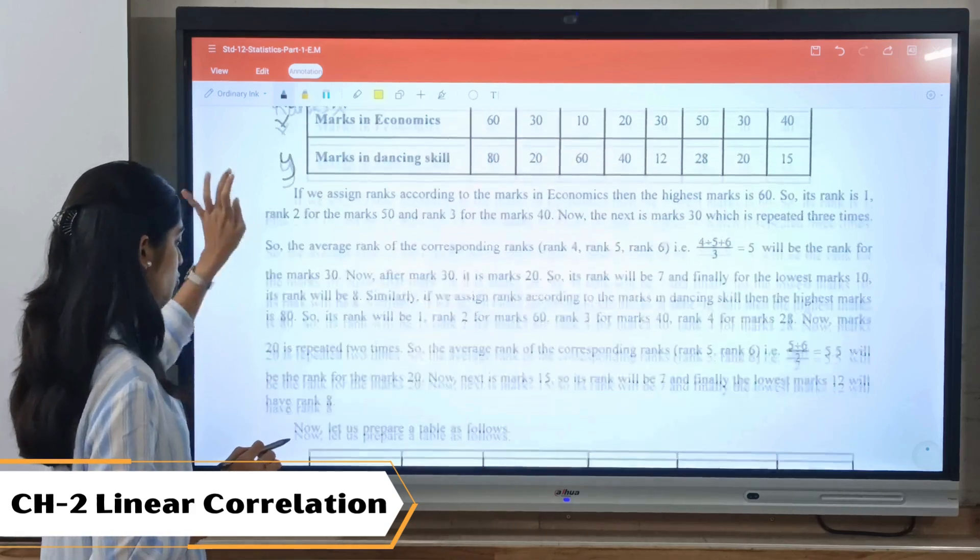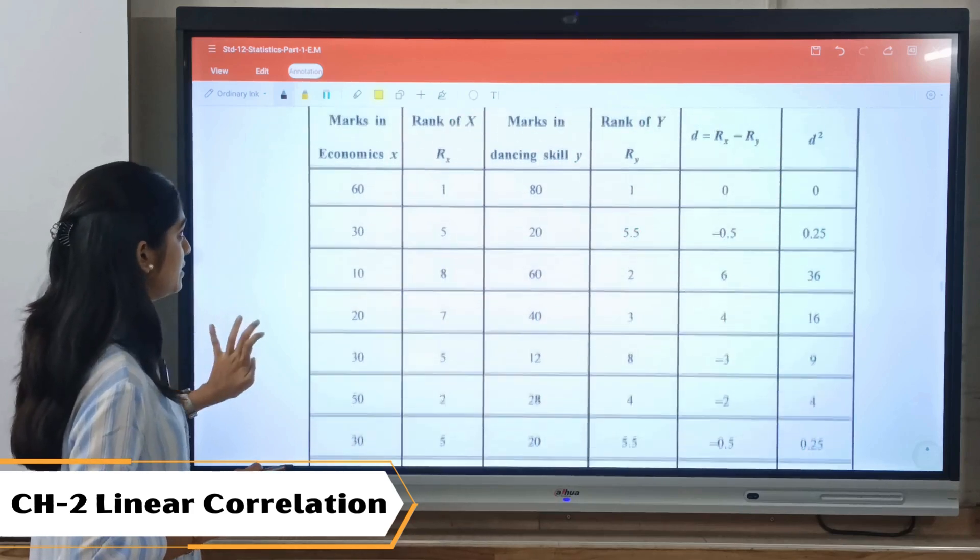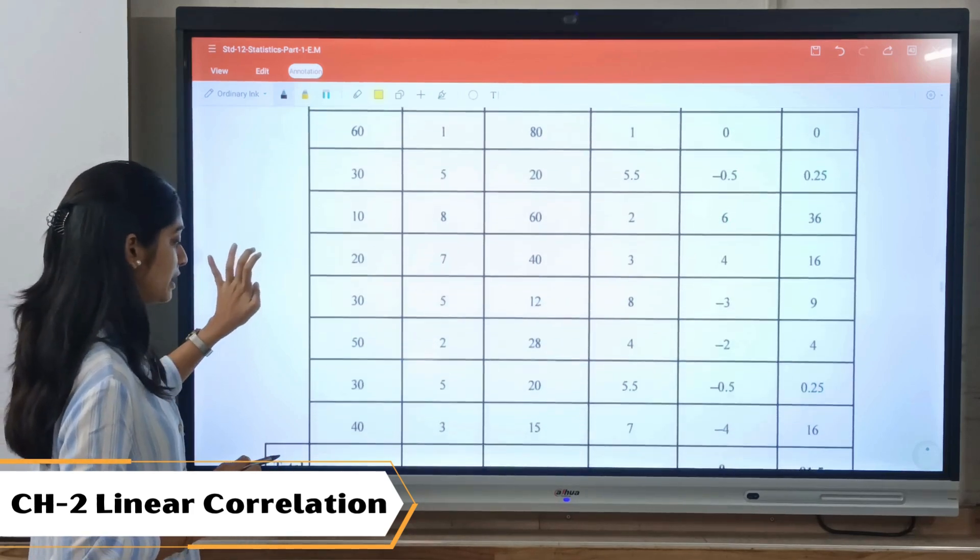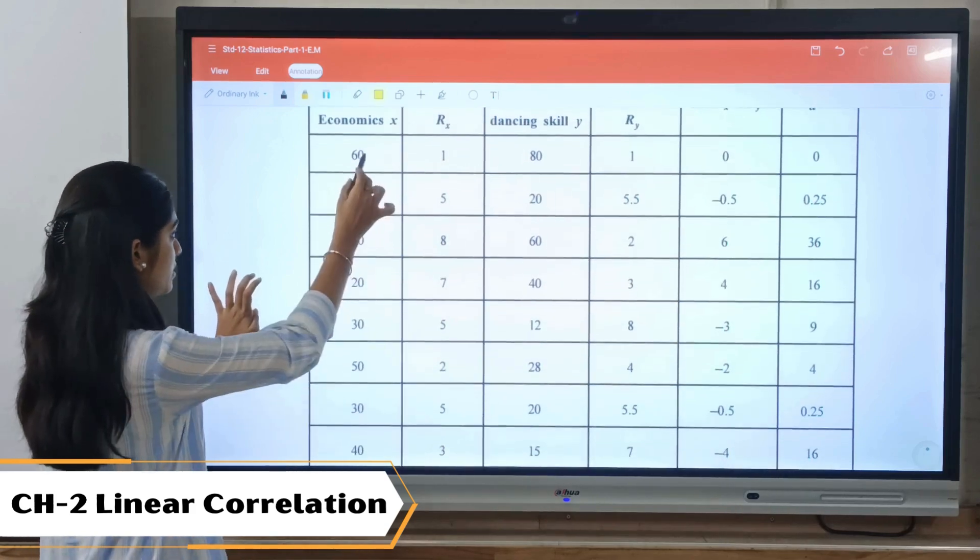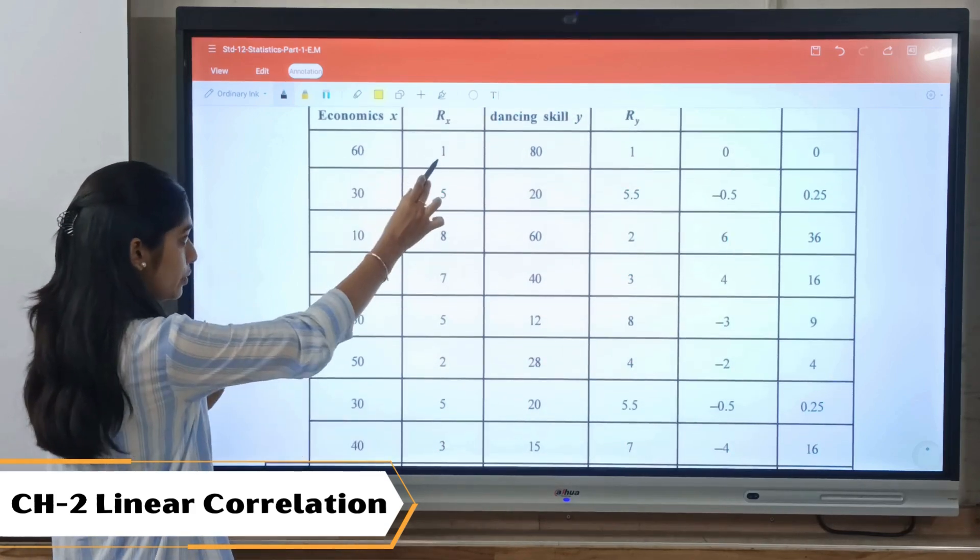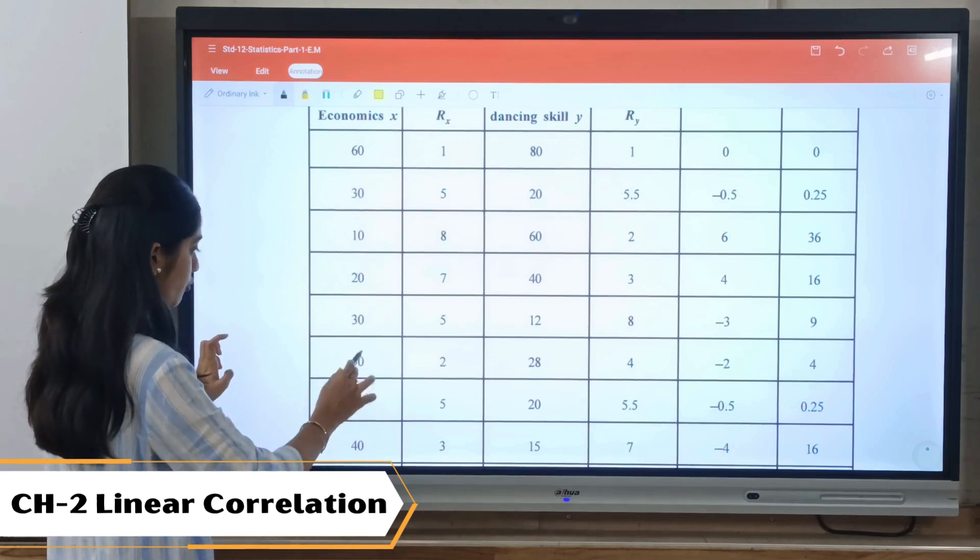Now how we are supposed to assign the rank: the number with higher value will be given first rank. So here the highest value is 60, so it will be given first rank. Then we have 50, which will be given second rank.